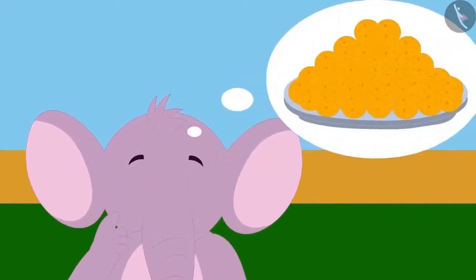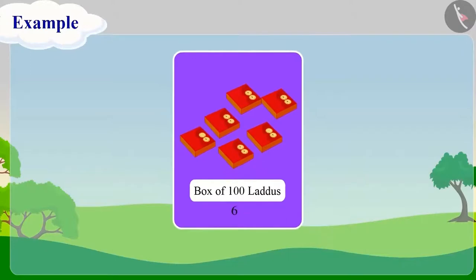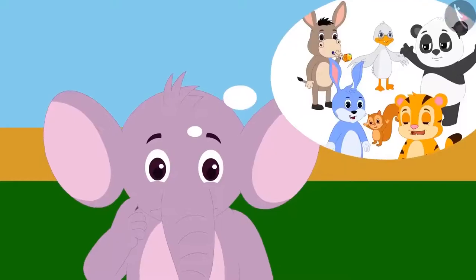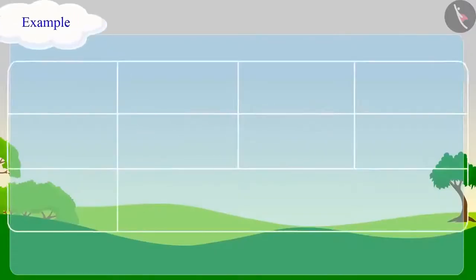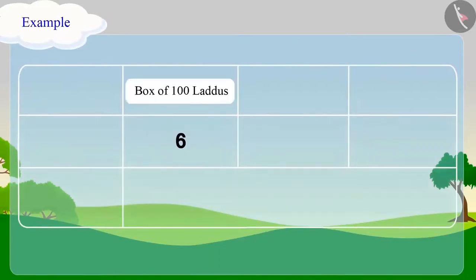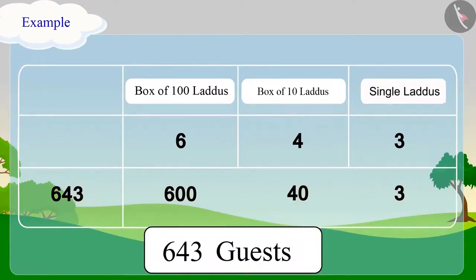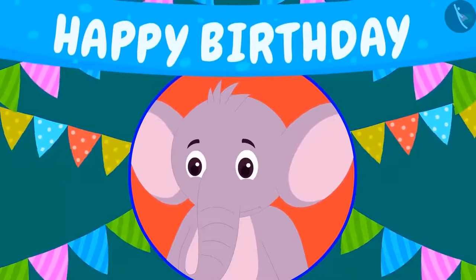Now Appu wants to take laddus for his guests. For every guest, he needs 1 laddu. He took 6 boxes of 100 laddus, 4 boxes of 10 laddus and 3 single laddus. Can you tell how many guests are coming to Appu's house? Let's do this together. There are 600 laddus in the 100 laddus box. There are 40 laddus in the 10 laddus box. And there are 3 single laddus. Now we will write the expanded numbers and we get 643. Oh wow! 643 guests are coming to Appu's party. Let's join the party.